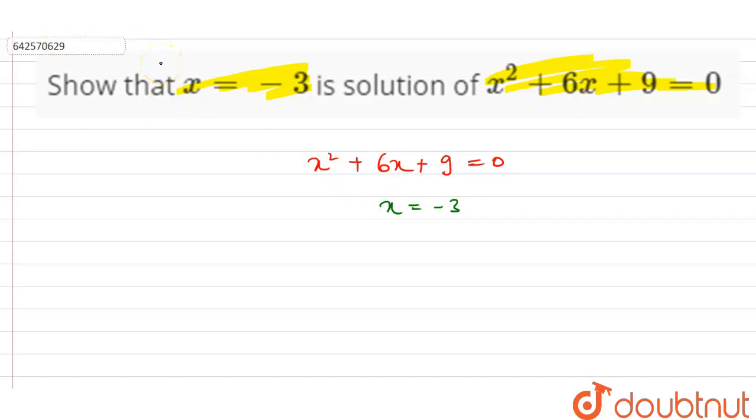Now which means that if we put the value of x = -3 in the equation and it comes out to be 0, that means x = -3 is the root of the equation or we can say solution of the equation.